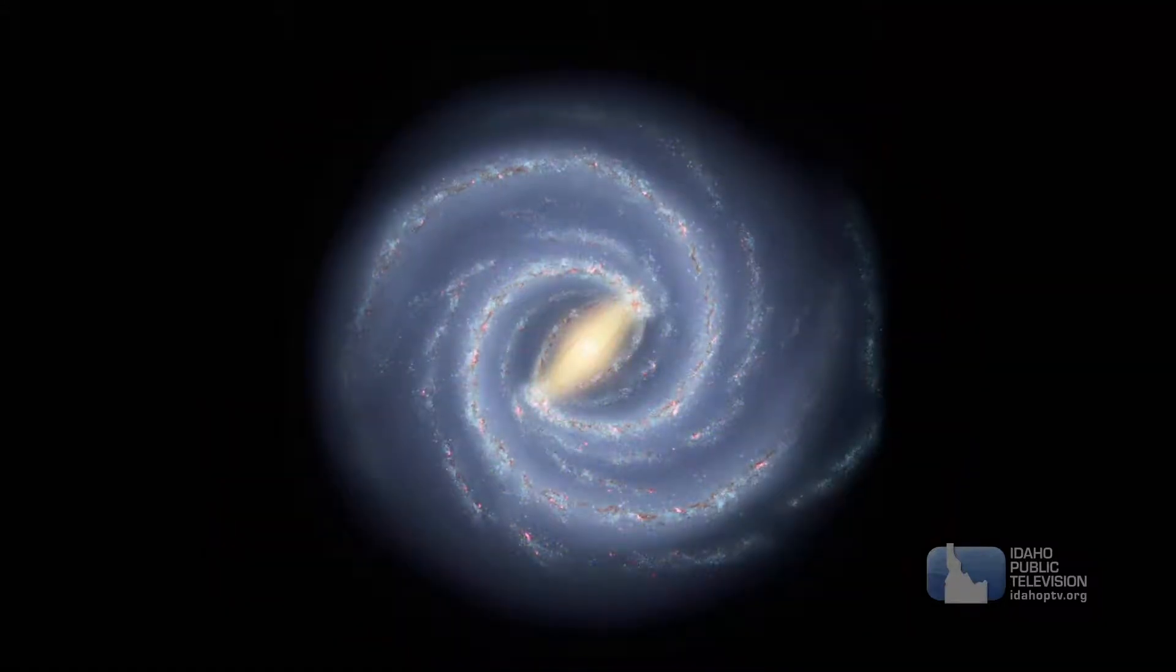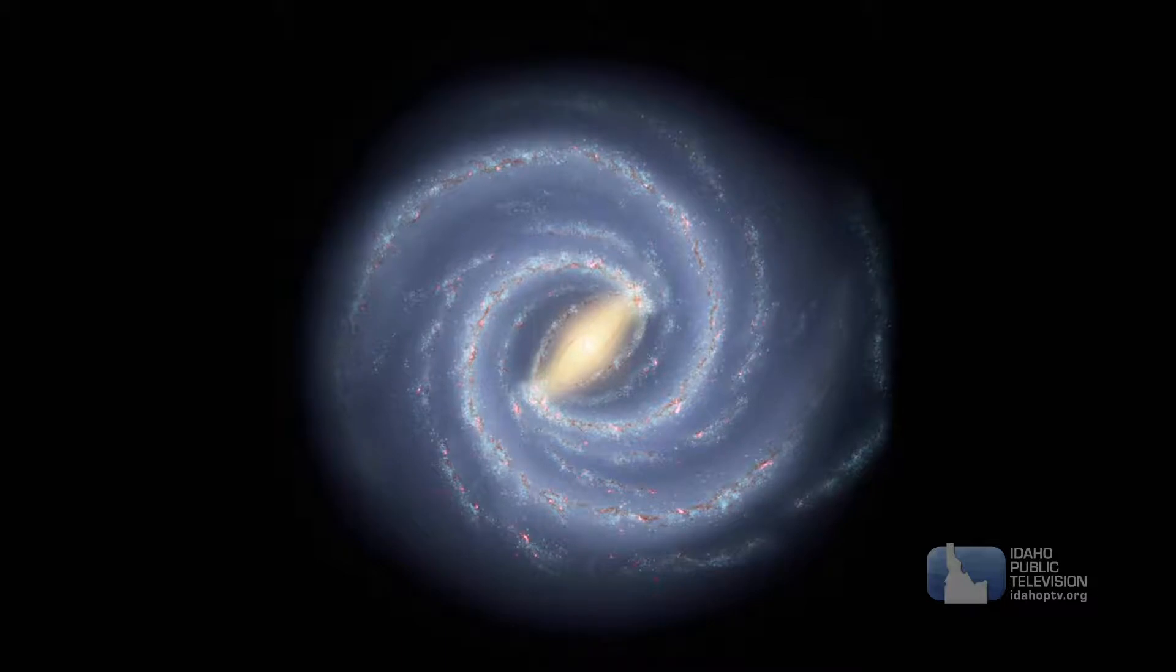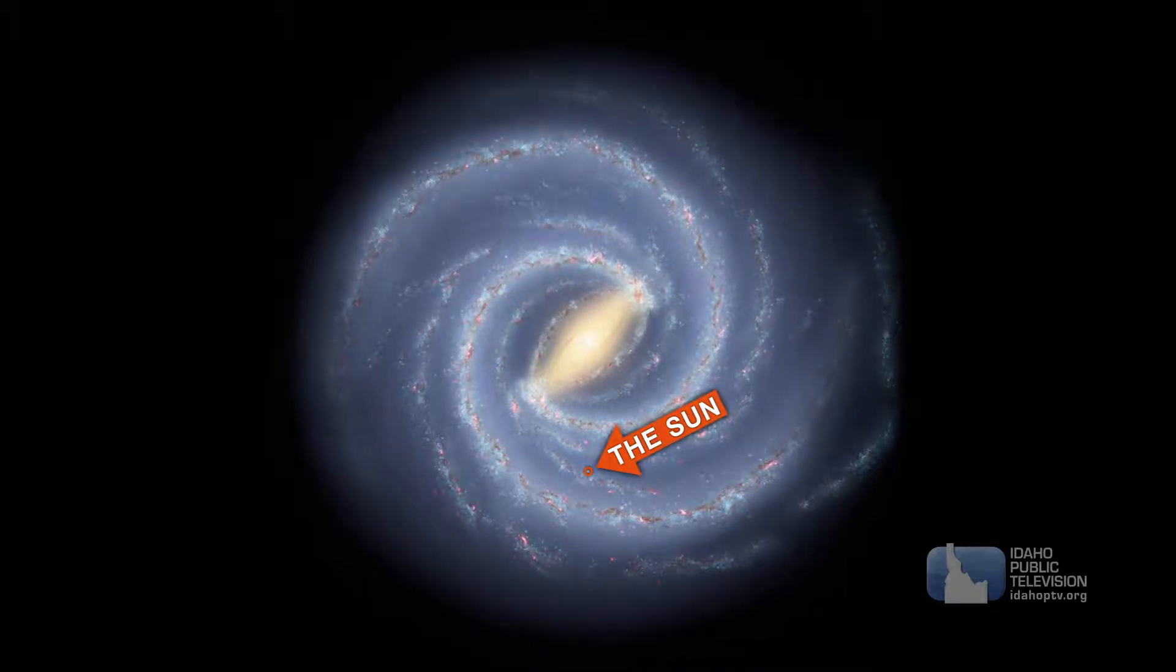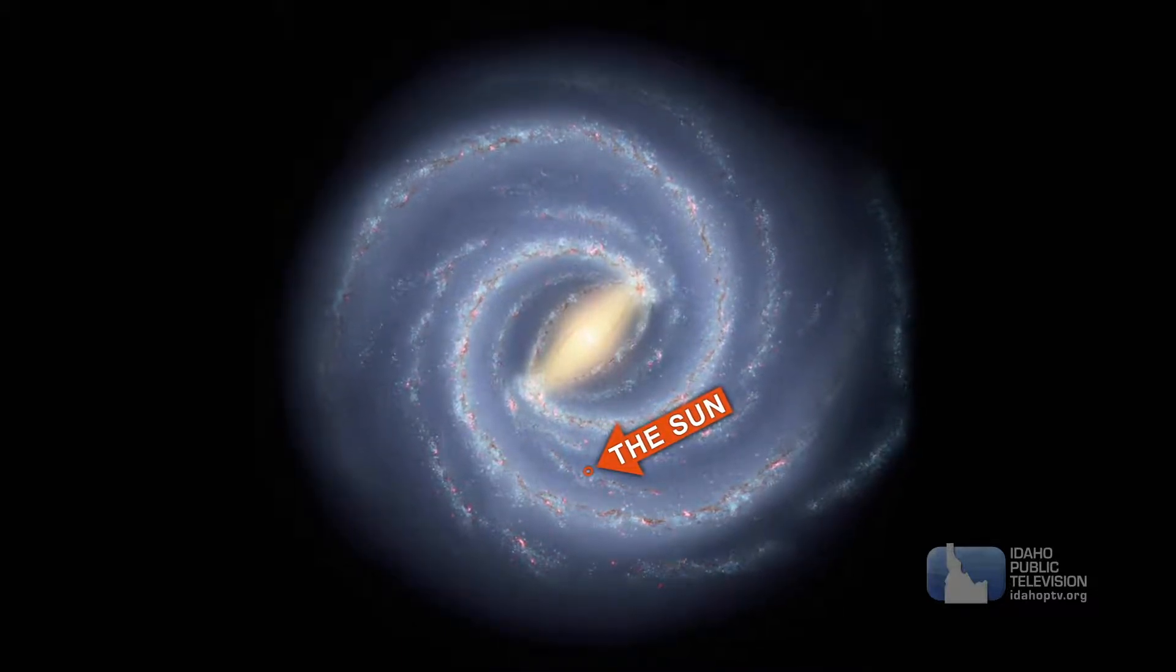There are about 200 billion stars in the Milky Way galaxy. Our sun is roughly halfway between the center and the edge of the Milky Way.